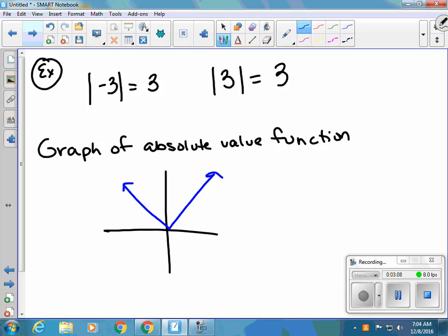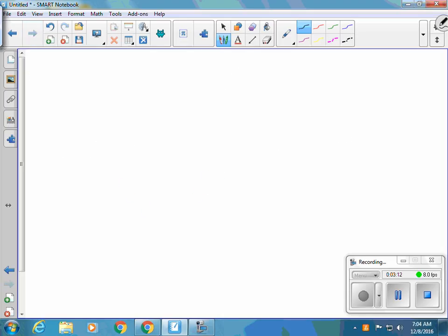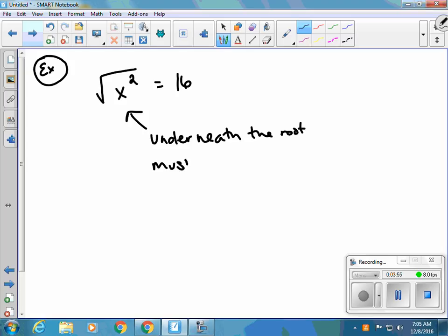With square roots, let's say that I have the absolute value of x squared, and that equals 16. Here's where the absolute value comes into play. We know that the square root of a square is going to cancel everything out, but what we need to know is that any number underneath the root must be positive.